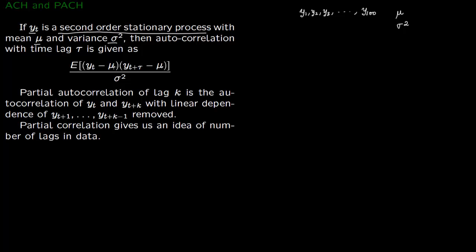E[(Y_t - μ)(Y_{t+τ} - μ)]/σ². The partial autocorrelation function of lag k is the autocorrelation of Y_t and Y_{t+k}, but now you're removing the linear dependence. This linear dependence is completely removed.